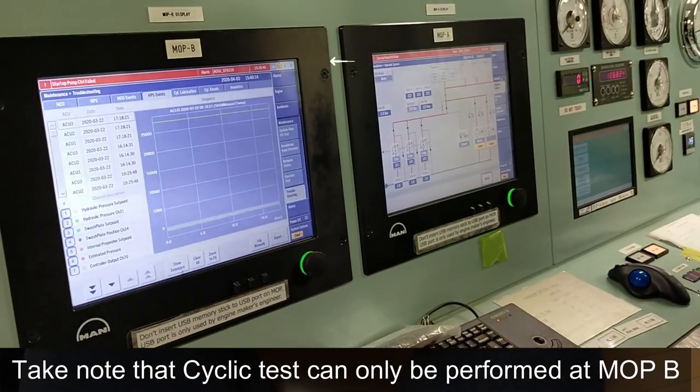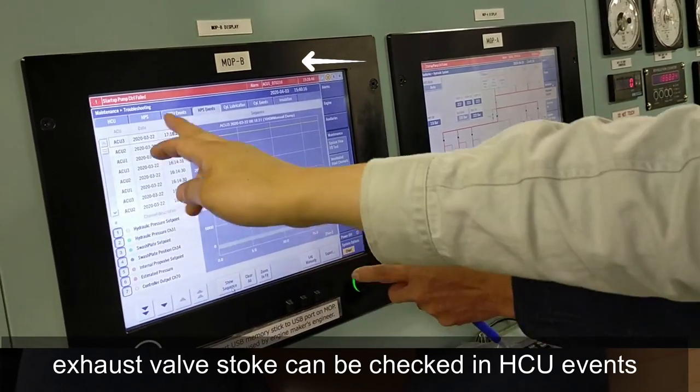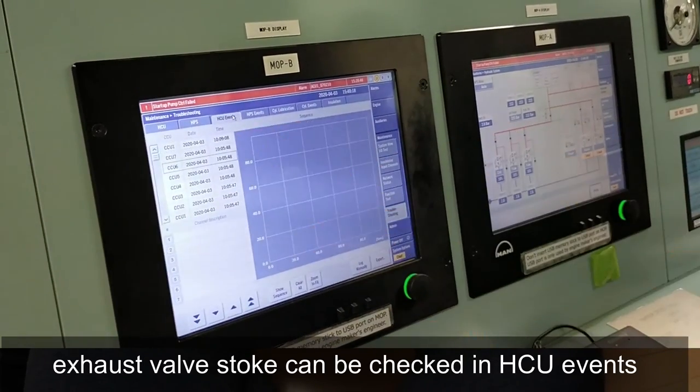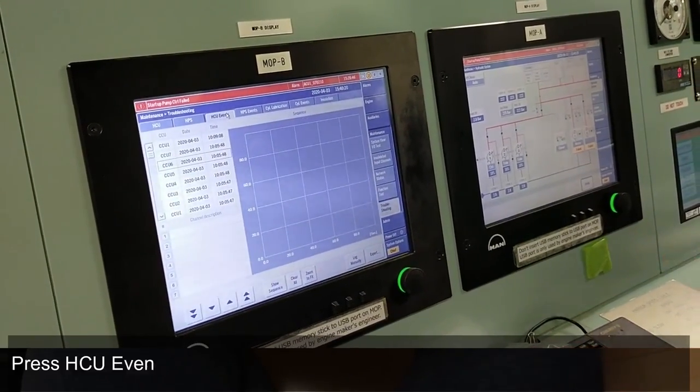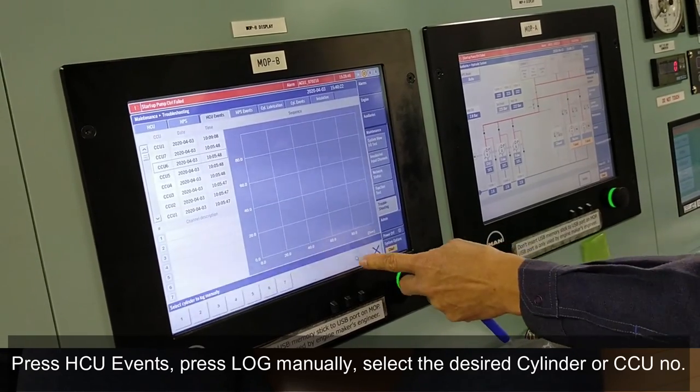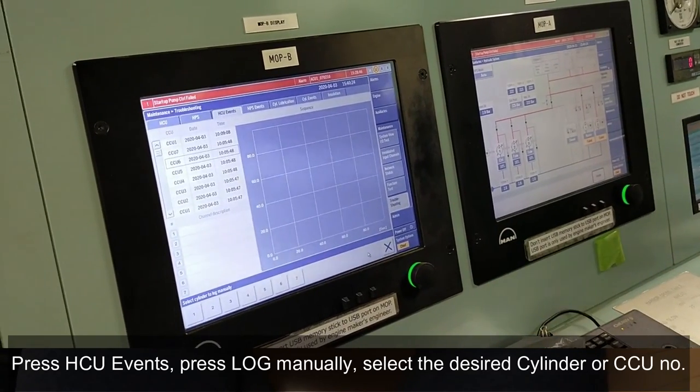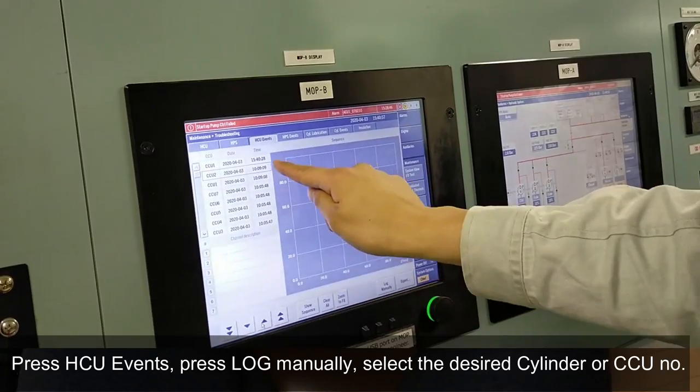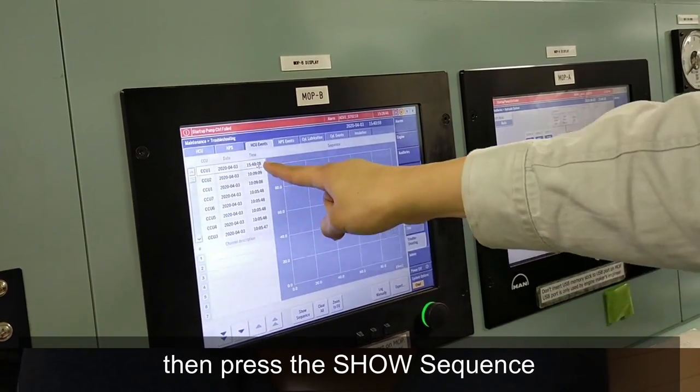Take note that cyclic test can only be performed at MOPB, and exos valve stroke can be checked even in HCU events. Just press HCU events, press lag manually, select the desired cylinder or CCU number, then press the show sequence.